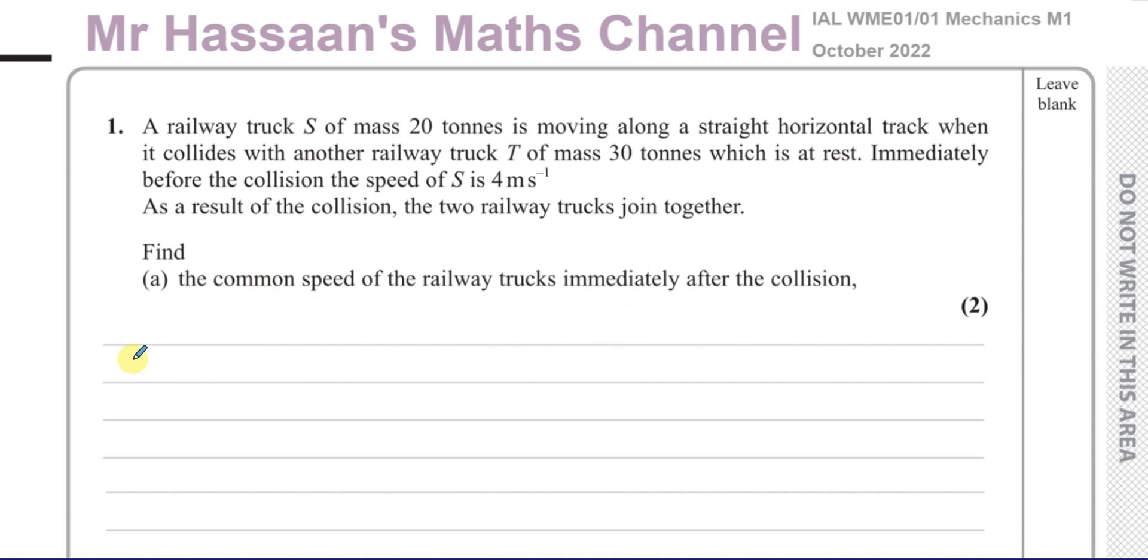So let's just make a little diagram to illustrate what's happening. I'm going to put a before and after diagram. So before, you have a truck which is moving towards another truck. Let's just draw a little rectangle and another rectangle. So this is S, and this is T. S has a mass of 20 tonnes.